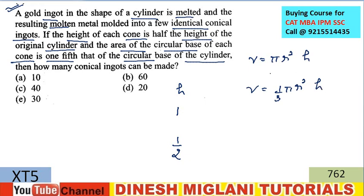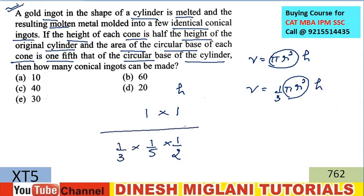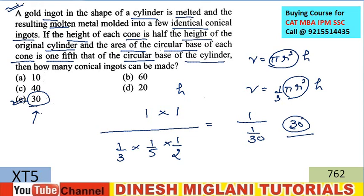The area of the circular base of each cone is one-fifth of the circular base of the cylinder. Volume of cylinder = πr²h, volume of cone = (1/3)πr²h. The cone base area is 1/5 of cylinder base area. So dividing the cylinder volume by the cone volume: the number of conical ingots = 1 ÷ (1/30) = 30. The answer is E — 30 conical ingots.